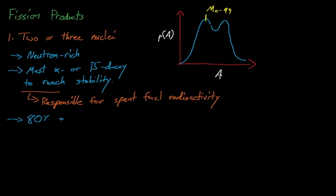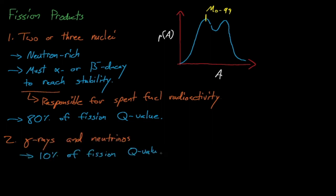The majority of the energy released by the fission reaction, about 80%, is carried away by the kinetic energy of these fission products. These high-energy fission products have an incredibly short range in materials, which means that most of the energy released from the fission reaction is deposited very close to where the reaction occurs. In contrast, gamma rays and neutrinos that are also released from fission carry about 10% of the energy from fission, and these particles have a much larger range.